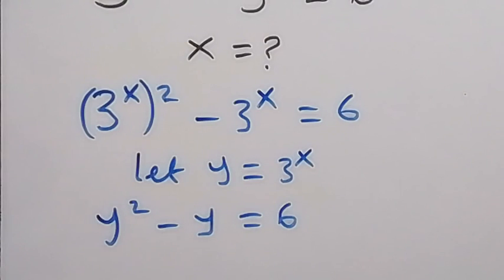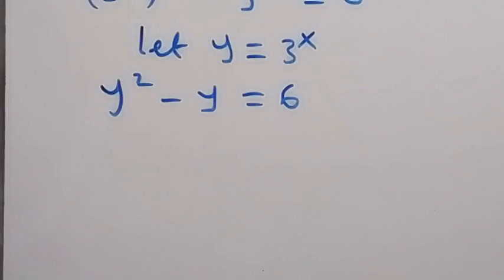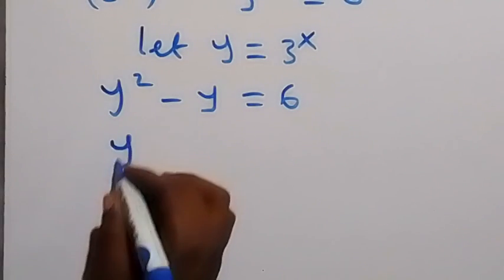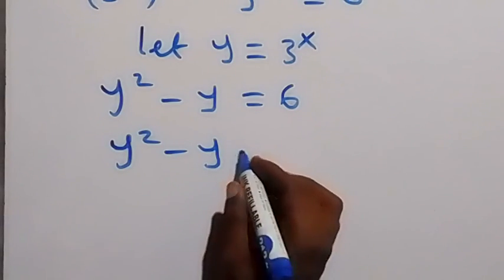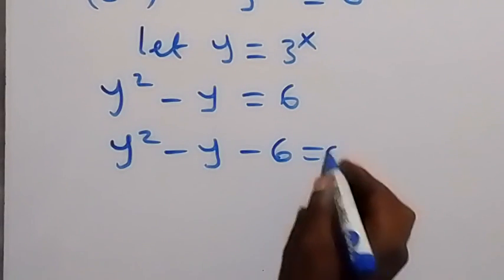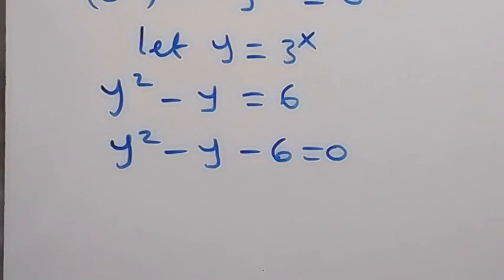So we take this 6 to the other side to form an equation, and this will give us y square minus y minus 6 equals to 0. Then we can solve for y in this quadratic equation with any method we desire.